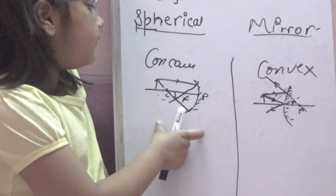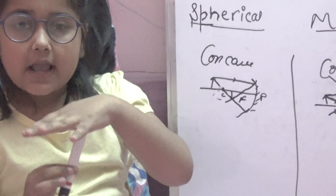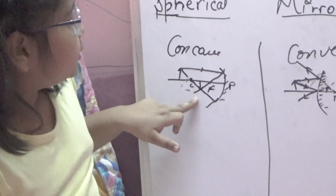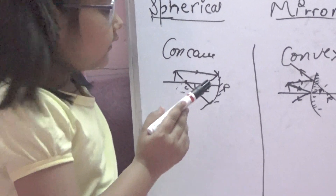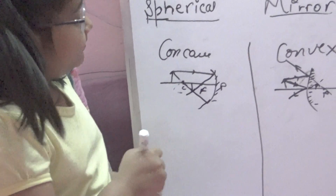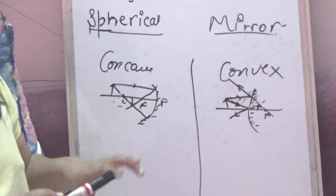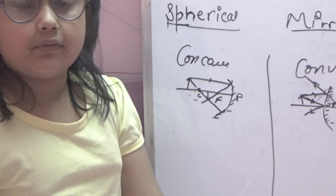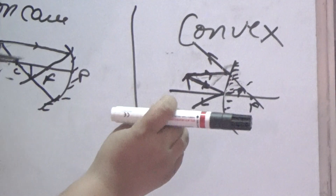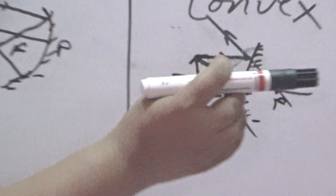Our third convention — in the case of concave — the distance measured downward and perpendicular to the principal axis is taken as negative. Here the image formed is inverted, so it is perpendicular and downward to the principal axis, and this distance is taken as negative. There is one more convention for the case of convex: all distances measured upward and perpendicular to the principal axis are taken as positive. Here the image formed is erect, so it is perpendicular and upward, and all those distances are taken as positive.